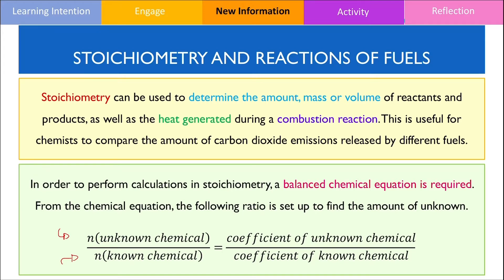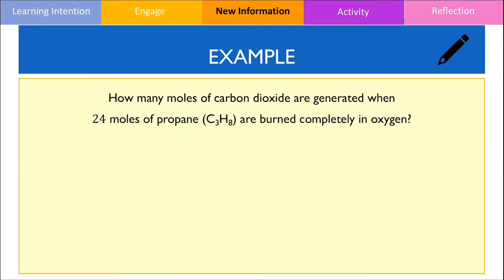Let's have a look at a simple stoichiometric example. We want to find the number of moles of carbon dioxide generated when 24 moles of propane is burned completely in oxygen. With all stoichiometric problems, the first step is to write a balanced chemical equation. We should recall that complete combustion produces carbon dioxide gas and water vapour. The balanced chemical equation for the combustion of propane should look like this.